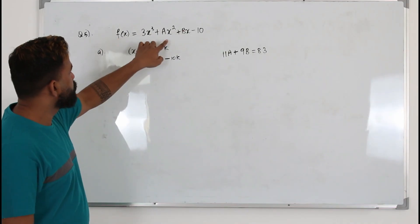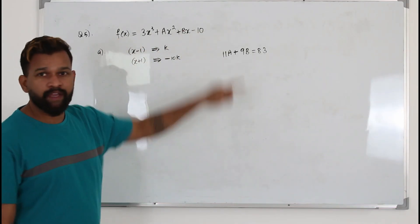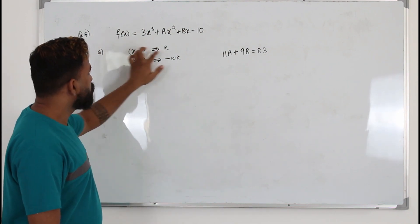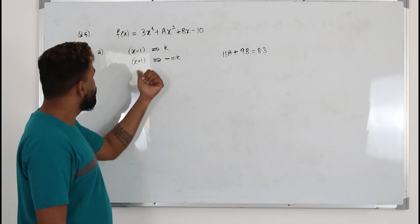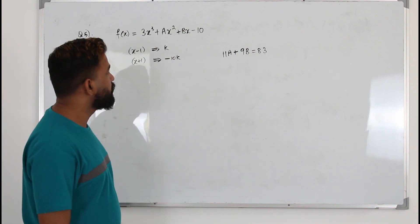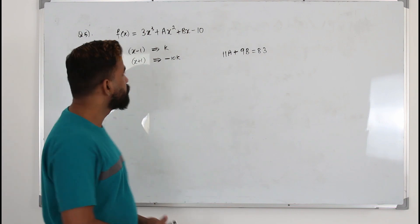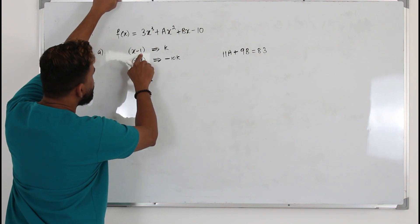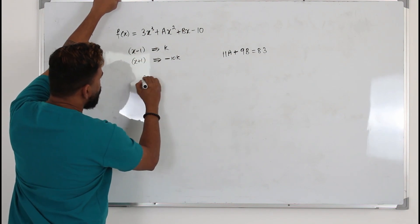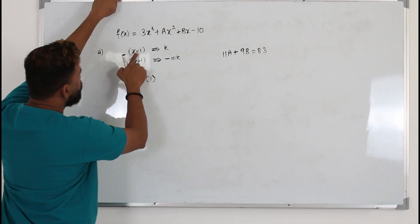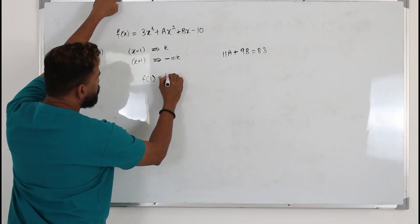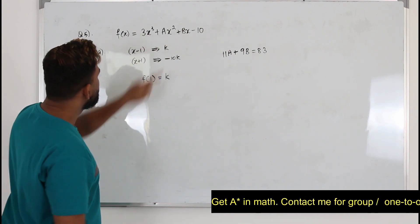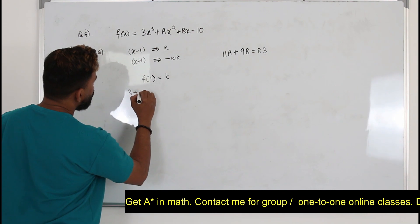In Part A, you have a function 3x³ + ax² + bx - 10. The given information is: when it's divided by x - 1, the remainder is k. The remainder theorem says when the function is divided by x - 1, the remainder will be f(1). So you replace x by 1, and frame the equation: 3 + a + b - 10 = k.